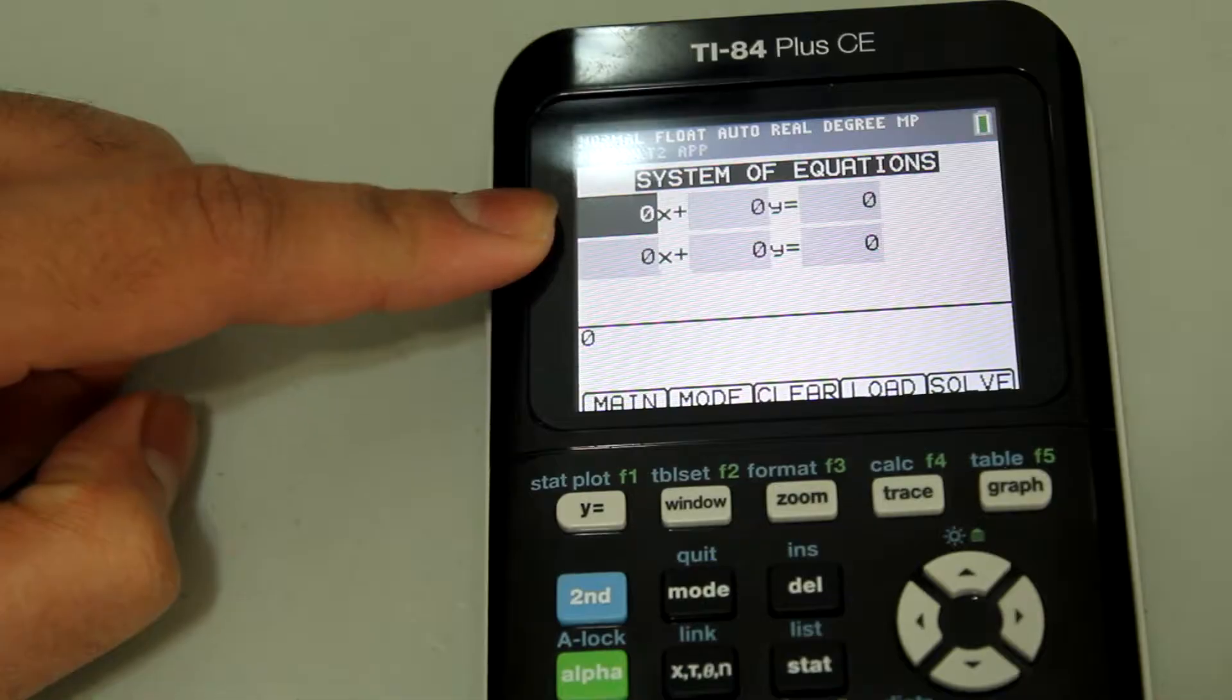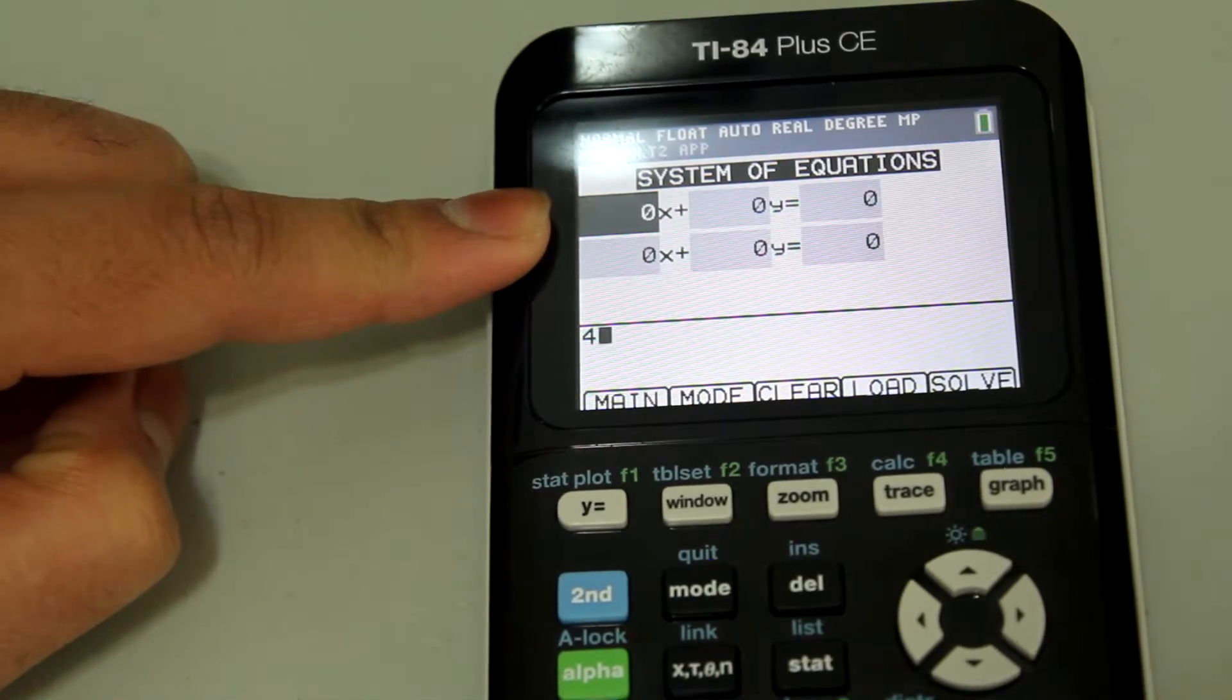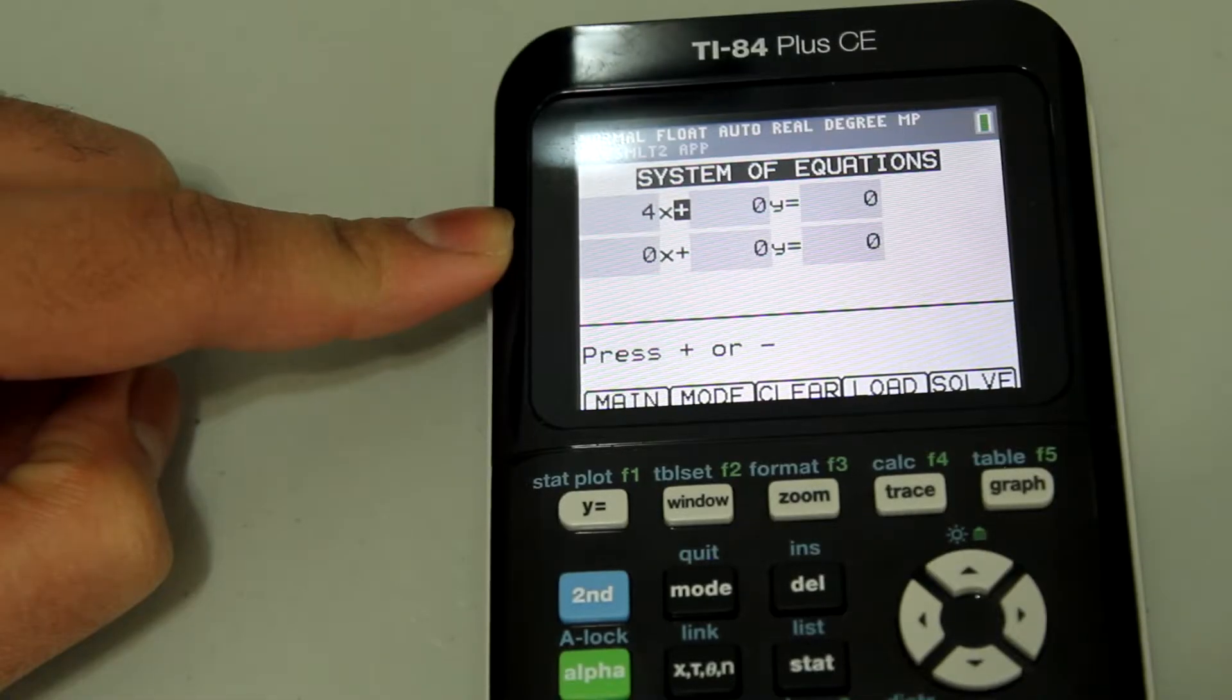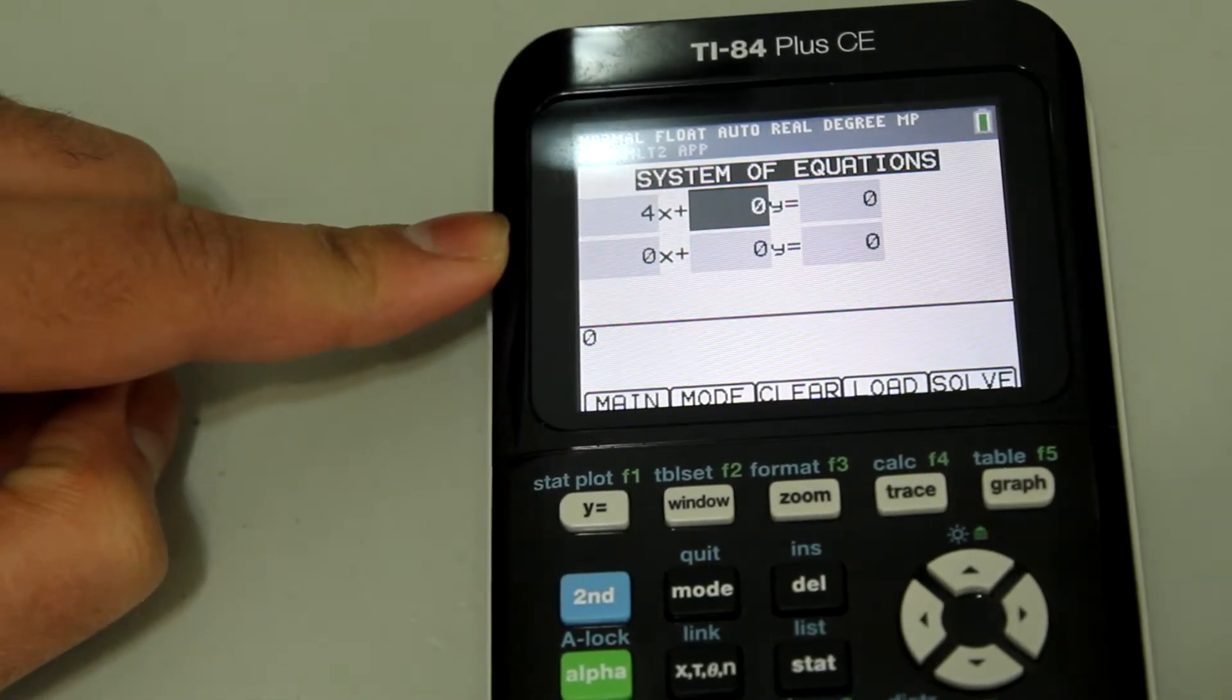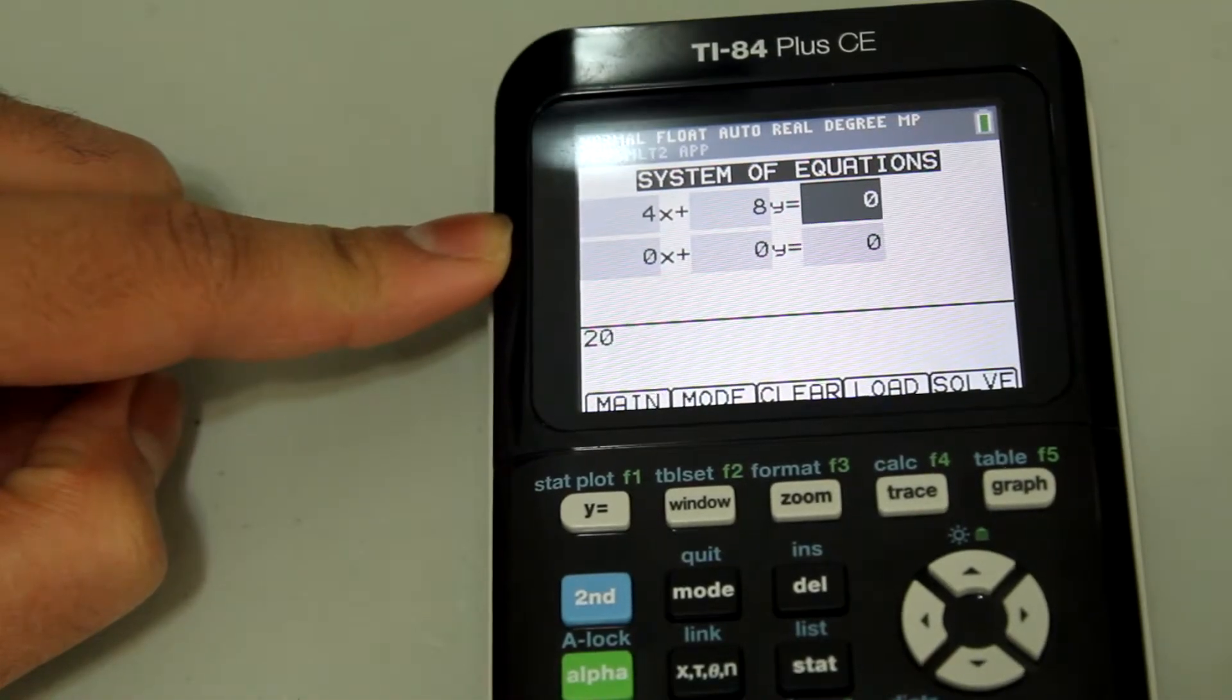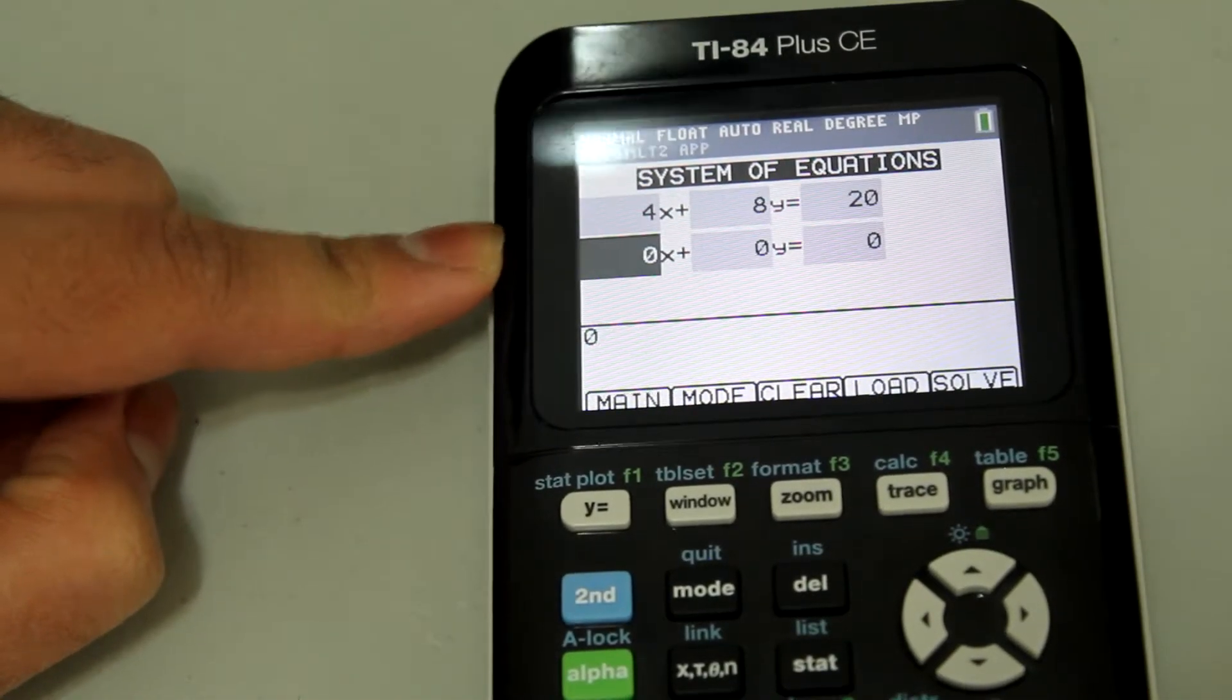So first, the coefficient for the x is 4, hit enter, the plus button, just hit enter because we're not changing that, 8y, so just hit 8 and enter again. And then the coefficient is just 20.